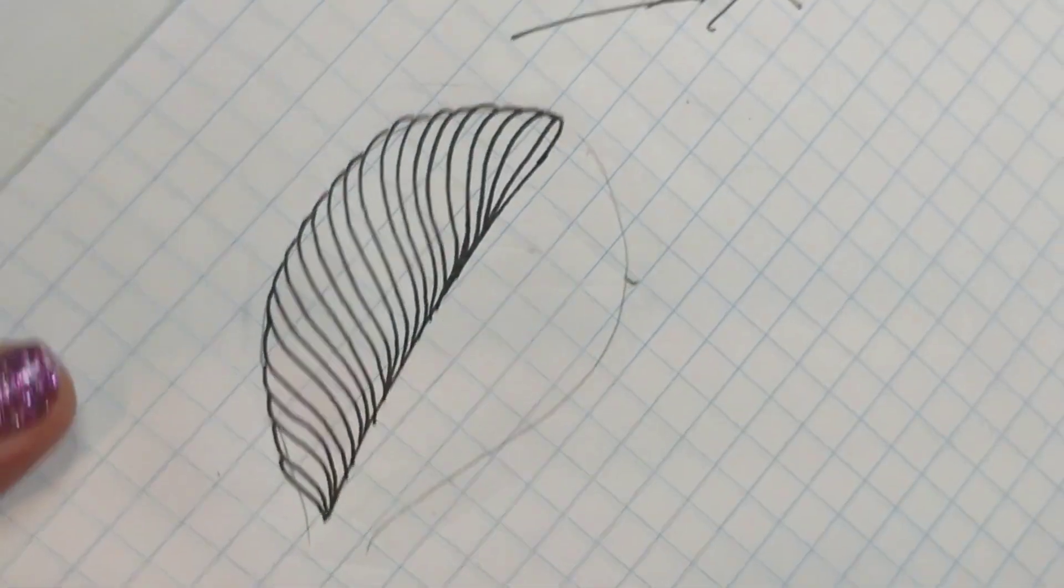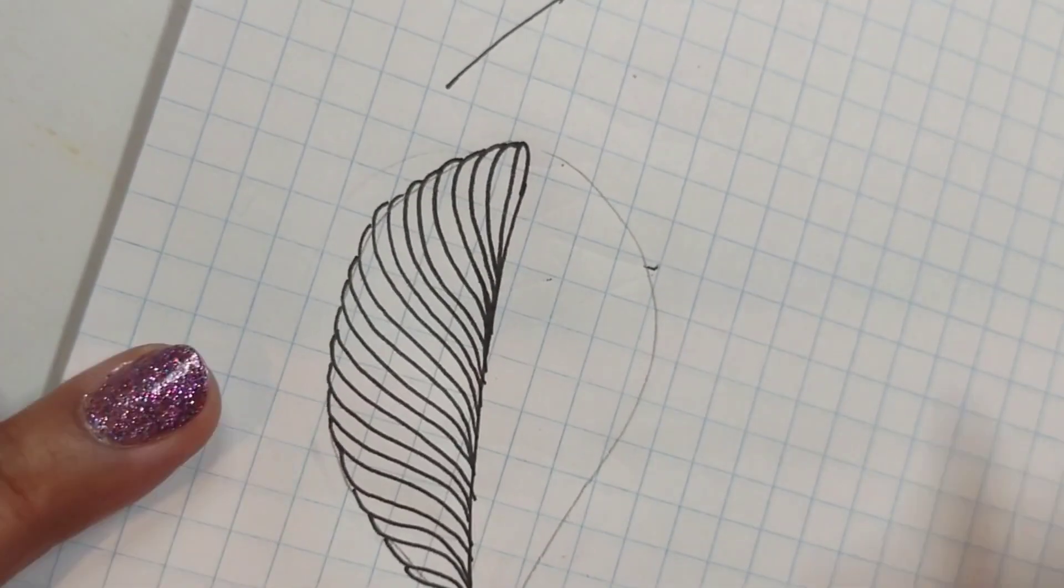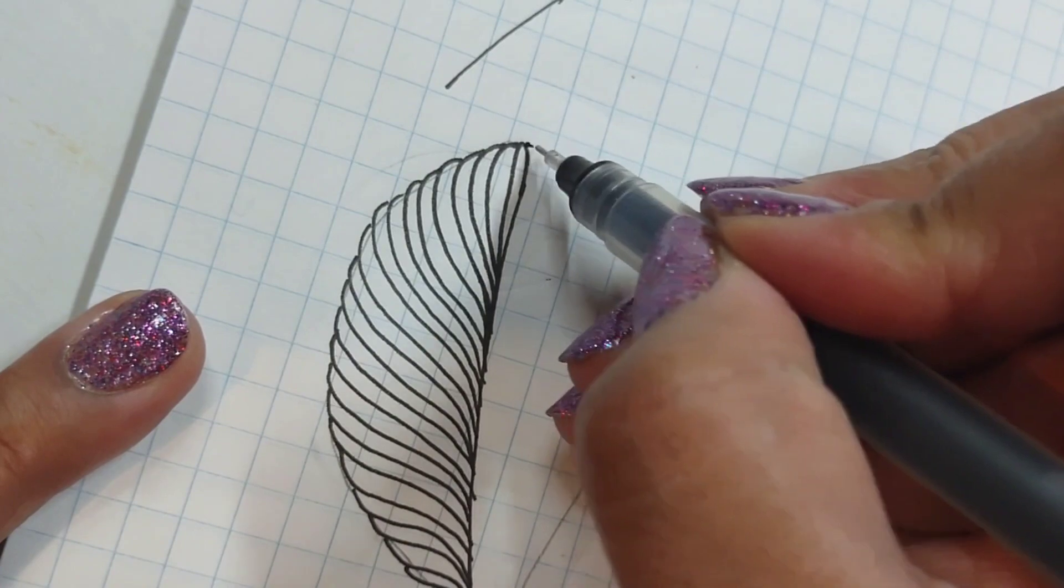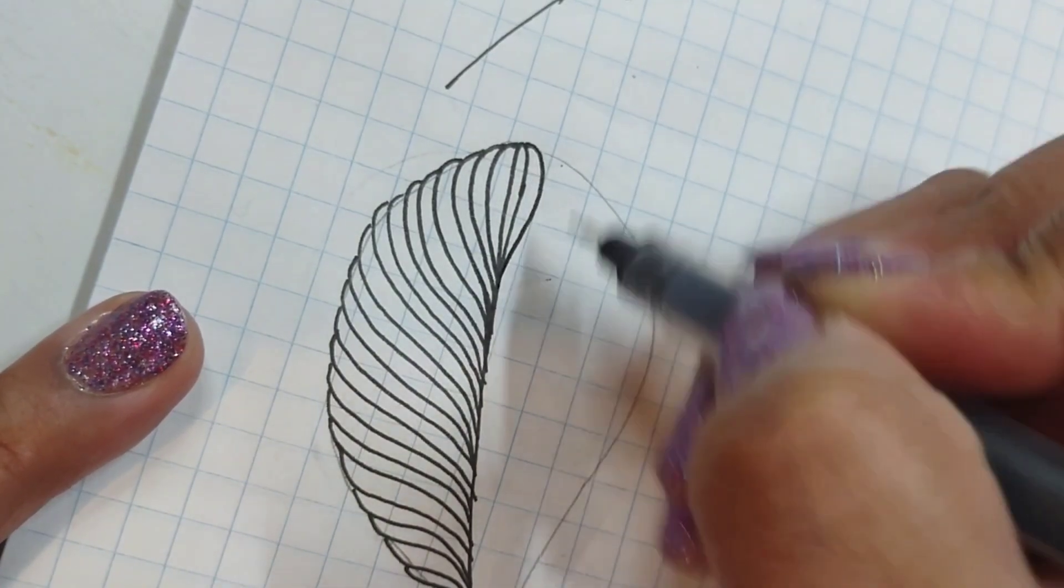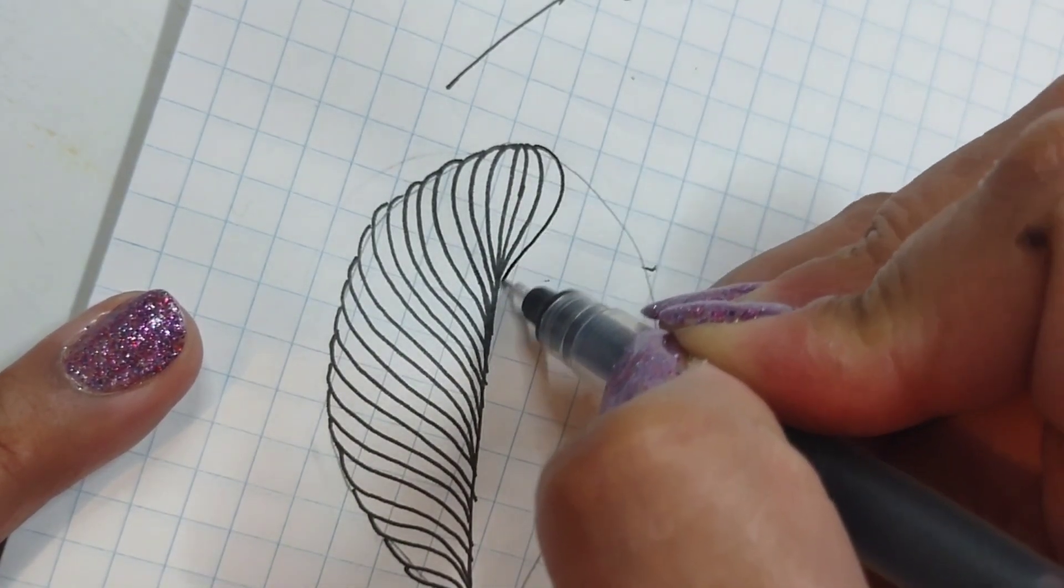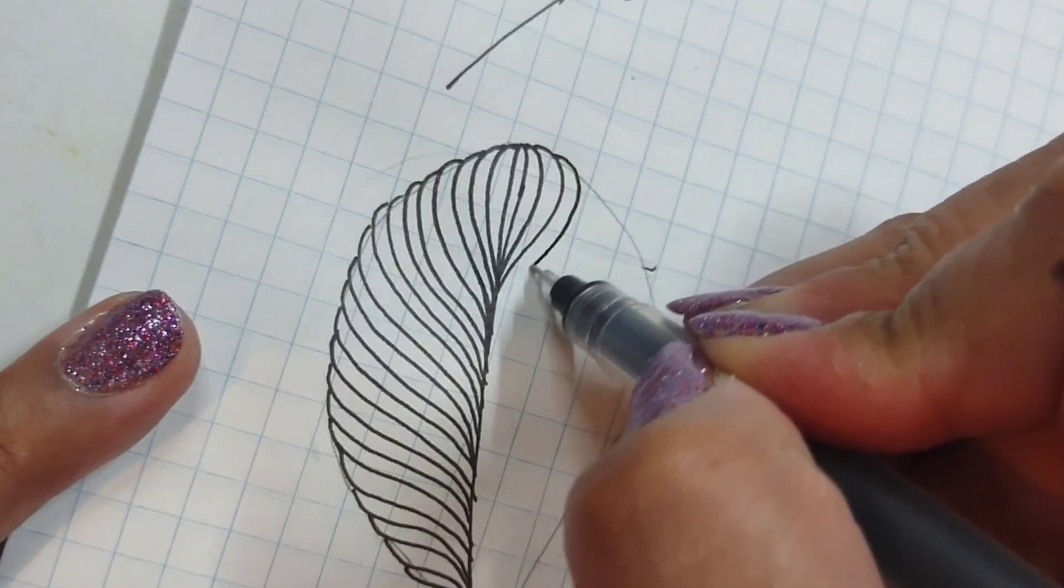I'm going to replicate this on the other side, but letting it curve in the other direction. So I'm going to try to start here at the top, head down. So these are still curved like the letter S.